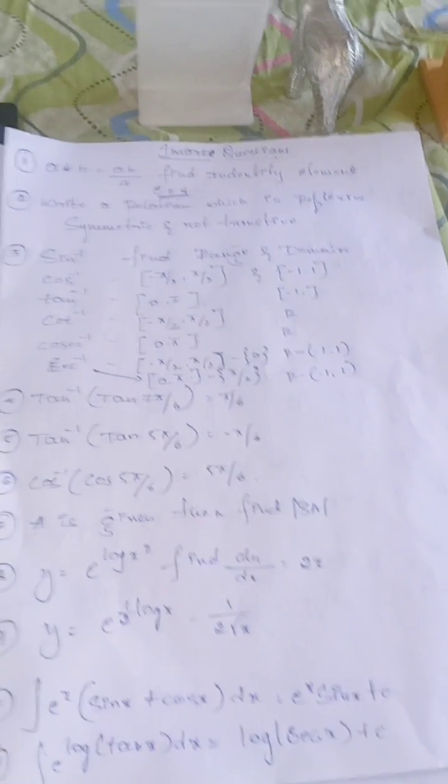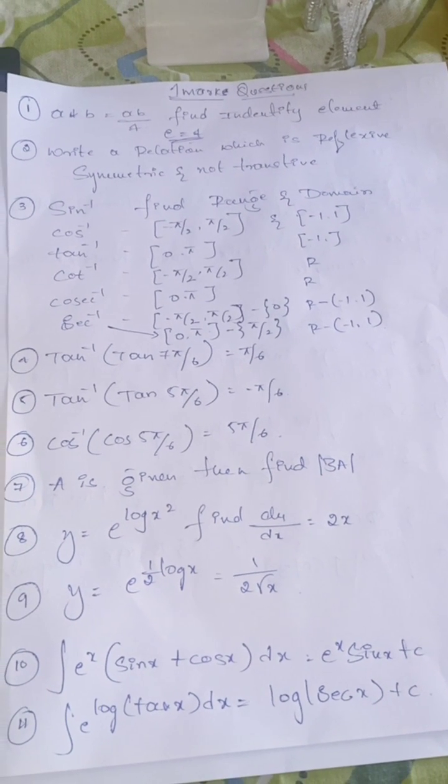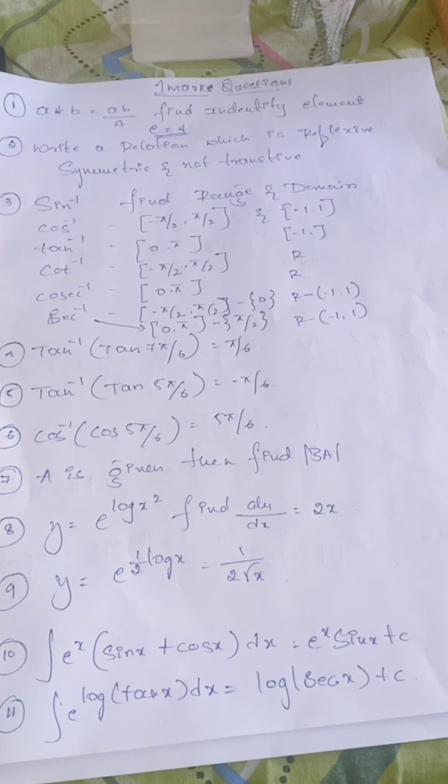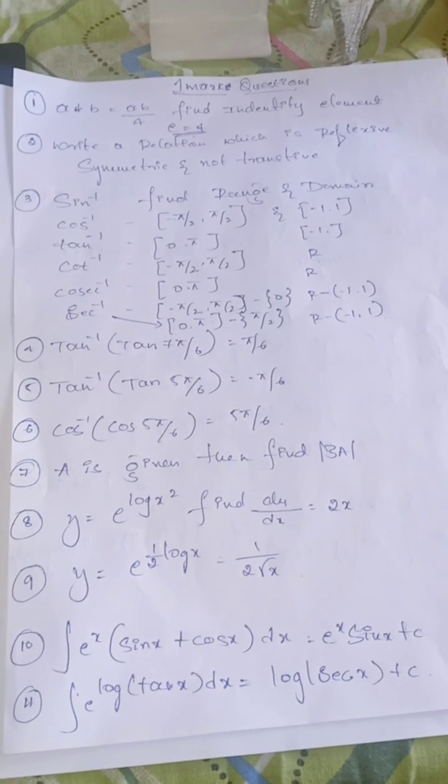One mark important questions. We are expecting day after tomorrow exam in relations and functions. If h star b is a b by 4, find identity element. Write the relation which is reflexive, symmetric, and not transitive.